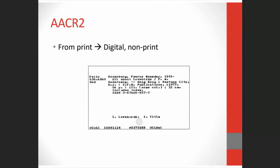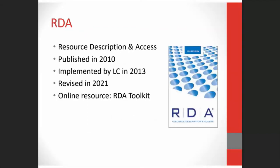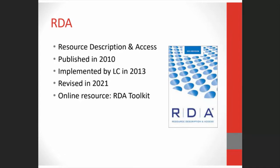Many catalogers said AACR II needed major revision because it was awkward to catalog digital and non-print items. So now we have RDA, or Resource Description and Access. RDA was published in 2010, fully implemented by the Library of Congress in early 2013, and recently revised in 2021. The RDA guidelines are found in an online resource called the RDA Toolkit, which can be accessed with a paid subscription.